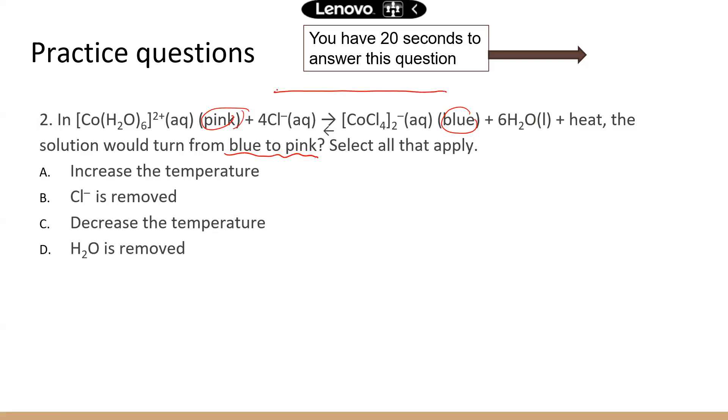So blue is here on the product side and pink is on the reactant side. So if the solution turns from blue to pink, then you know that we're talking about the shift from right to left, from product to reactant. So there's one way to do that. If you increase the concentrations of products, then that will make the chemical reaction go to the left.